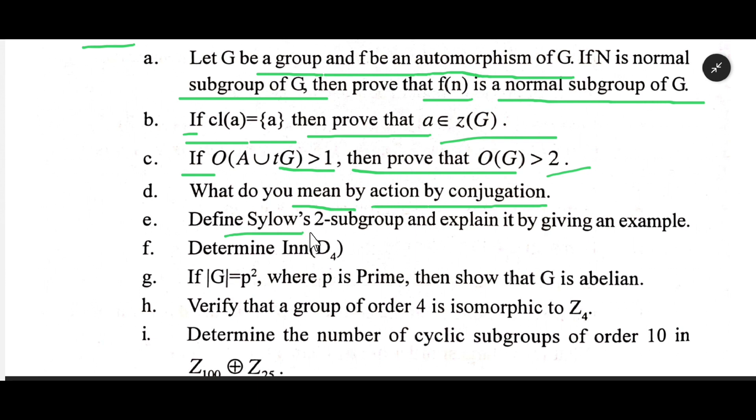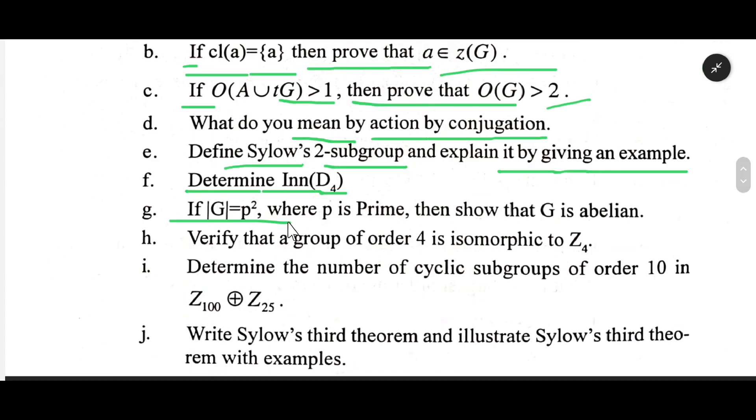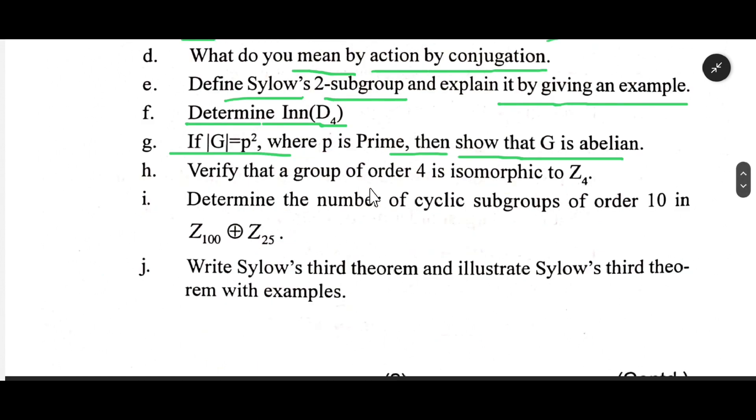Define Sylow's 2-subgroup and explain it by giving an example. Determine if |G| = p² where p is prime, then show that G is abelian. Verify that a group of order 4 is isomorphic to Z₄. Determine the number of cyclic subgroups of order 10 in Z₁₀₀ ⊕ Z₂₅.